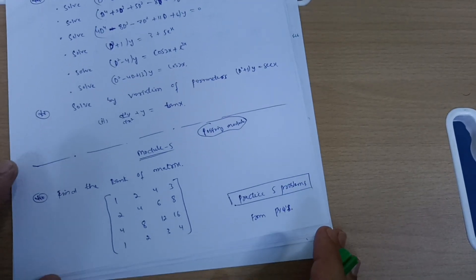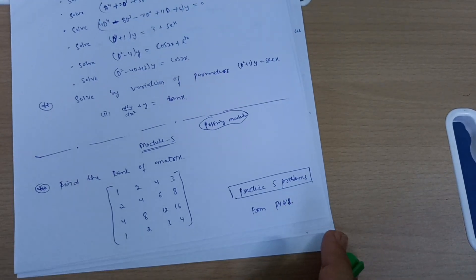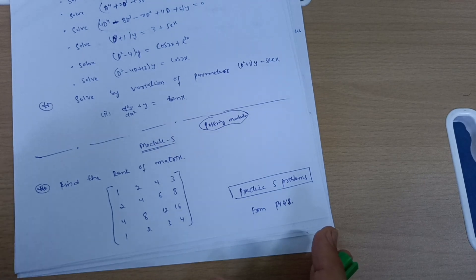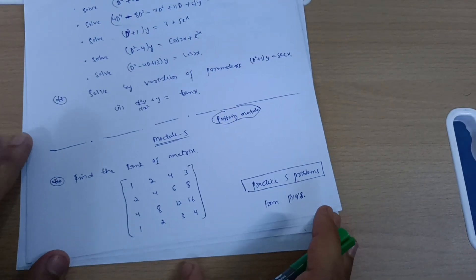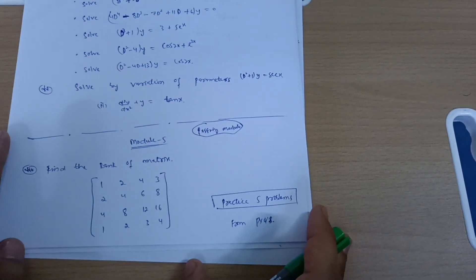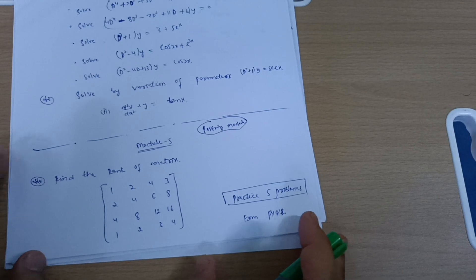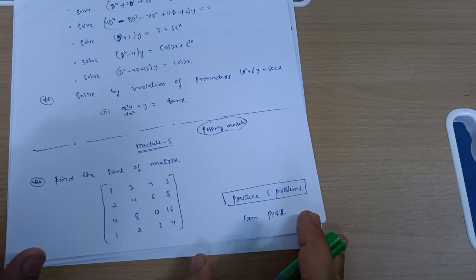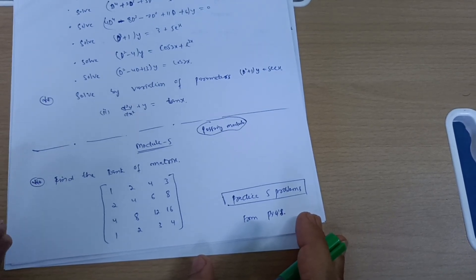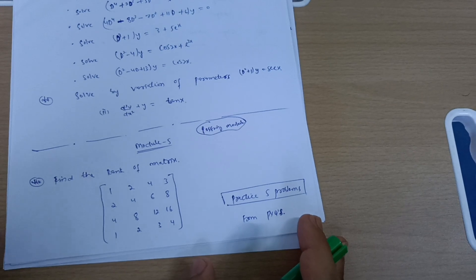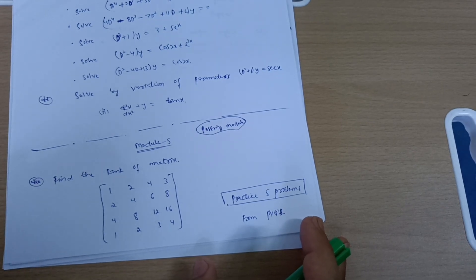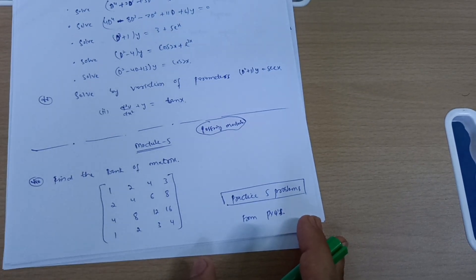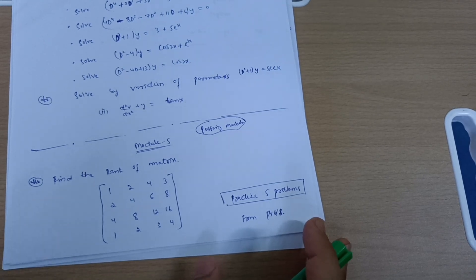Now module five, which is another passing module. These 20 marks you must compulsorily grab. This is the matrix chapter — very simple. If you are getting 20 marks, you will easily pass the mathematics subject. I give you a guarantee: if you take 20 marks from module five, your mathematics is passed. But make sure your answers are correct.